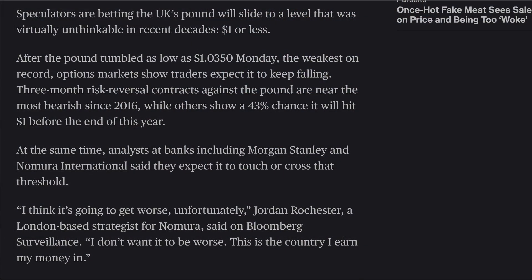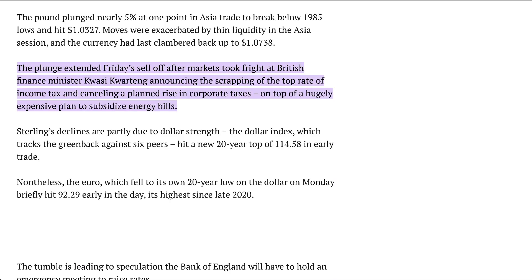After the pound tumbled to the weakest on record, options markets show traders expect it to keep falling. There's a lot of speculation taking place in the financial markets. The pound plunged nearly 3%. The plunge extended Friday's sell-off after markets took fright at the British finance minister announcing the scrapping of the top rate of income tax and canceling a planned rise in corporate taxes, on top of a hugely expensive plan to subsidize energy bills. Some people only wanted to point out one thing or the other, but this is what's going on.